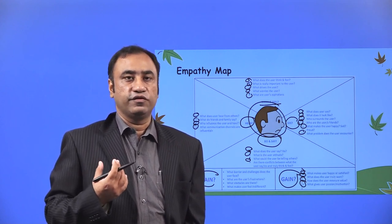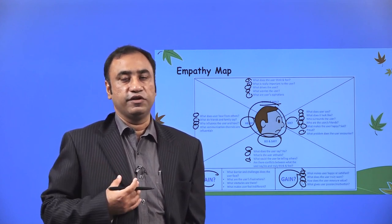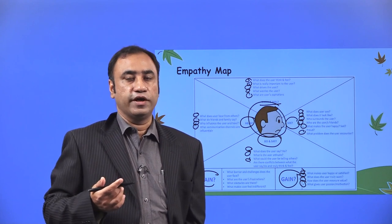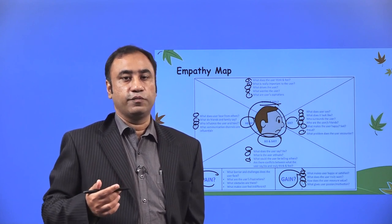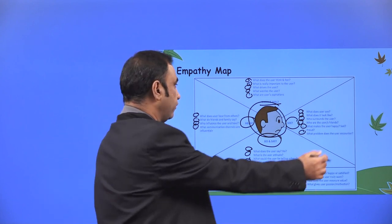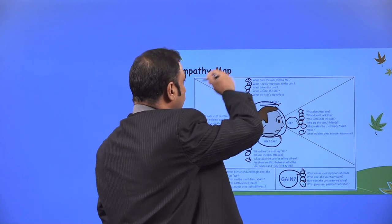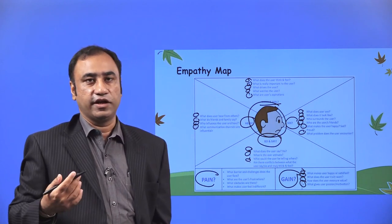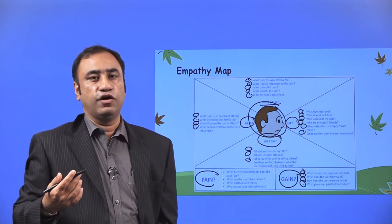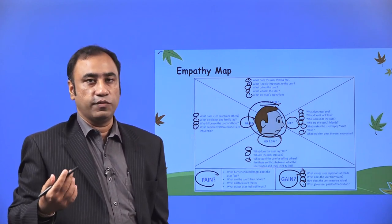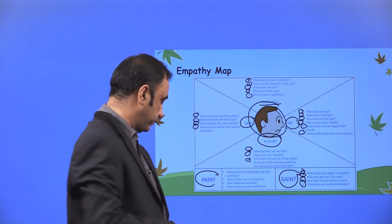Gain: What makes the user happy or satisfied? You have to take the user from one state to another — from the state of being in pain to the state of being in gain. You need to understand both the pain and the gain. What does the user truly want? How does the user measure value? What gives the user passion and motivation? These are the empathy tools used in the empathy process to understand the user in depth and collect a lot of information. This information becomes insight when you move ahead and define the problem of a particular user.